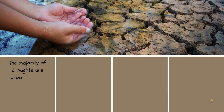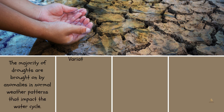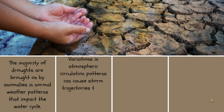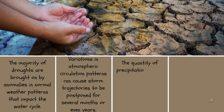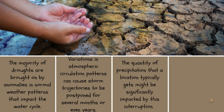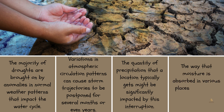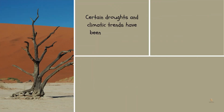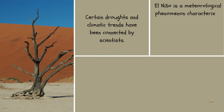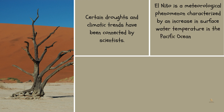The majority of droughts are brought on by anomalies in normal weather patterns that impact the water cycle. Variations in atmospheric circulation patterns can cause storm trajectories to be postponed for several months or even years, significantly impacting the quantity of precipitation a location typically receives. Wind patterns can also influence how moisture is absorbed in various places. Scientists have connected certain droughts to El Niño, a meteorological phenomenon characterized by an increase in surface water temperature in the Pacific Ocean along the central coast of South America.